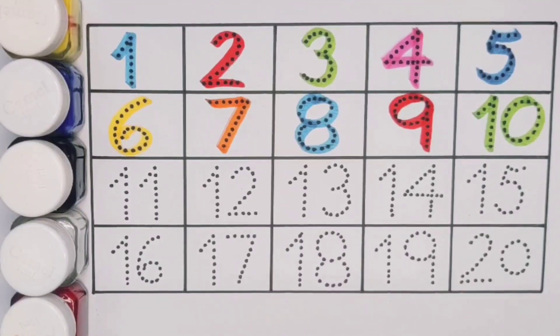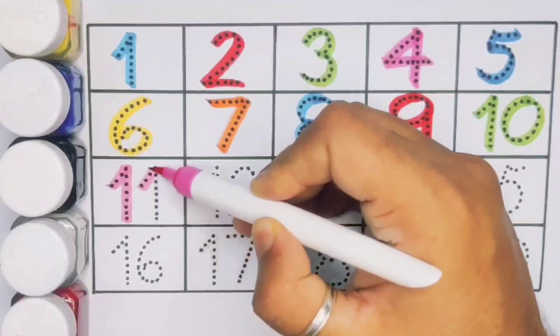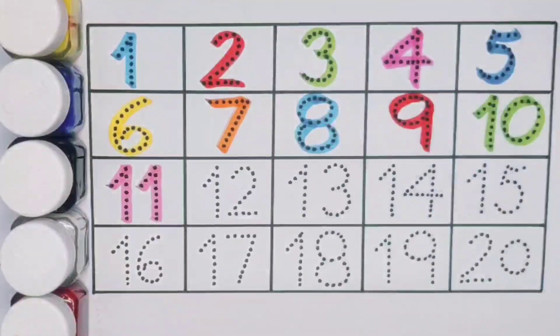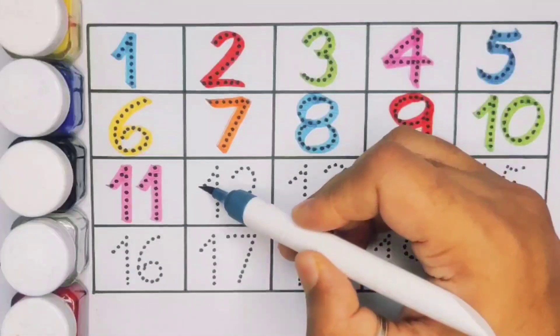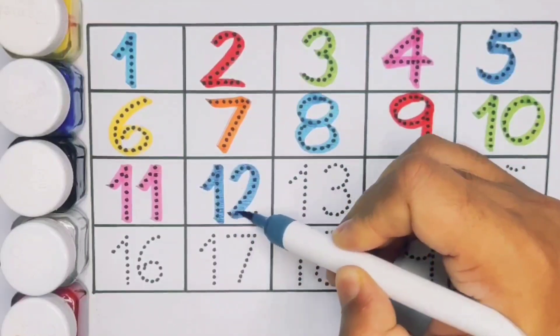Next kids 11, 1, 1, 11, number 11. Next kids 12, 1, 2, 12, number 12.